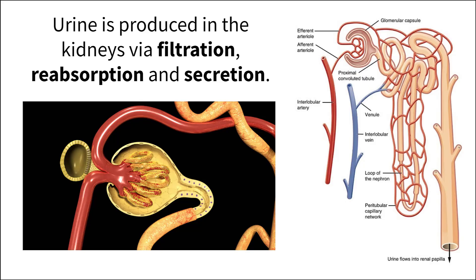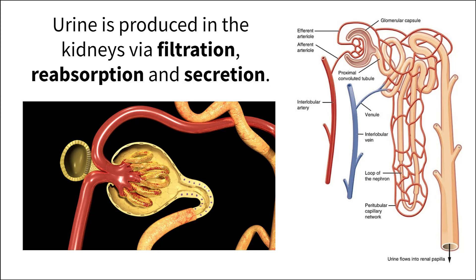The kidneys, and these functional subunits called nephrons, filter, reabsorb, and secrete substances at different times to both create and eliminate urine from the body. If we are to look at a nephron and the way material is filtered and moved through it, we should start with the renal corpuscle.